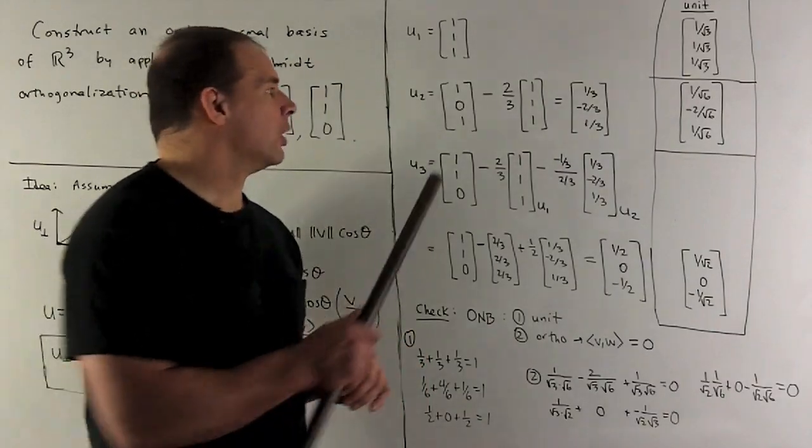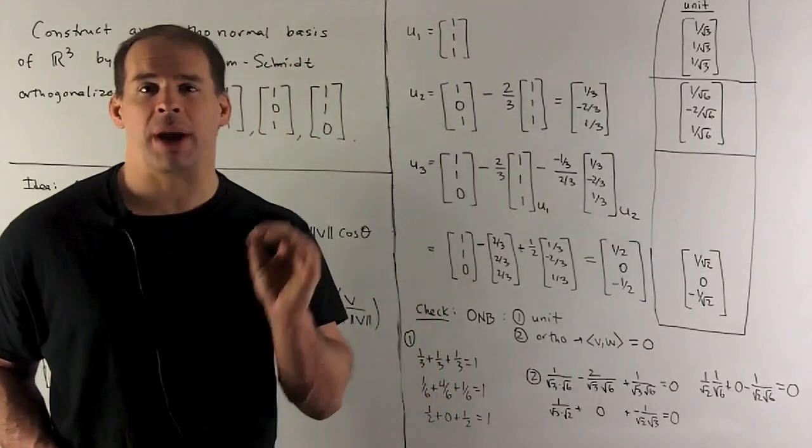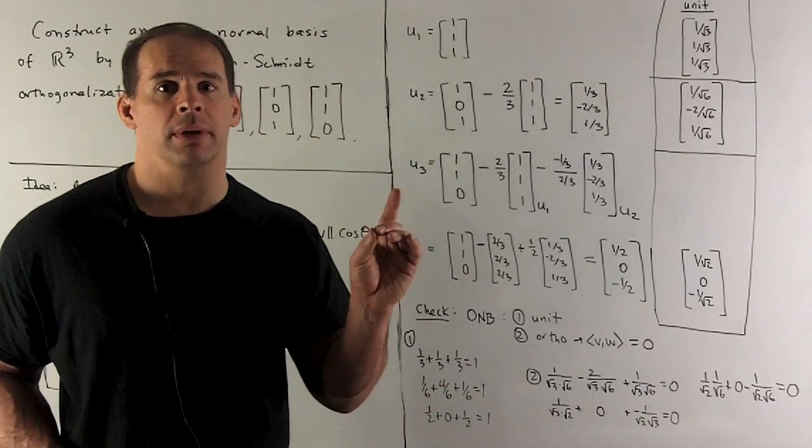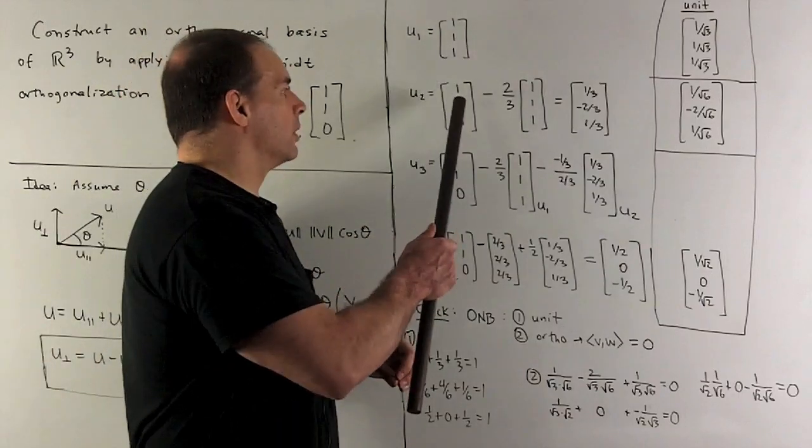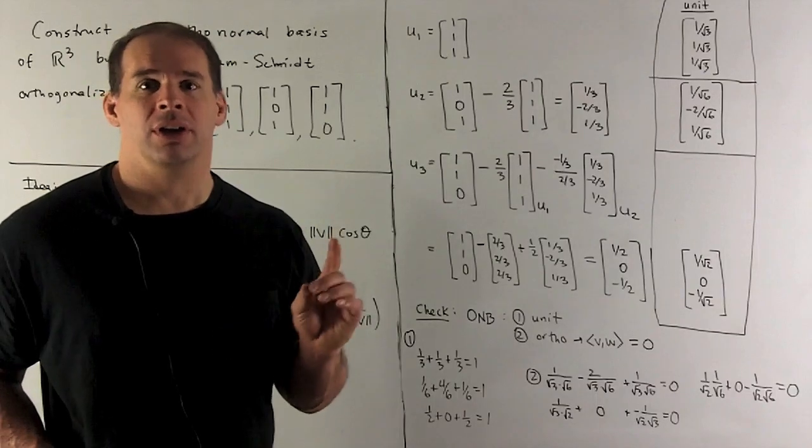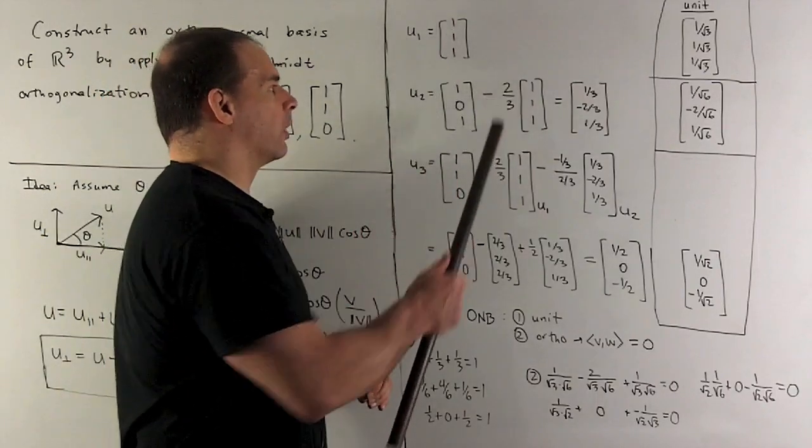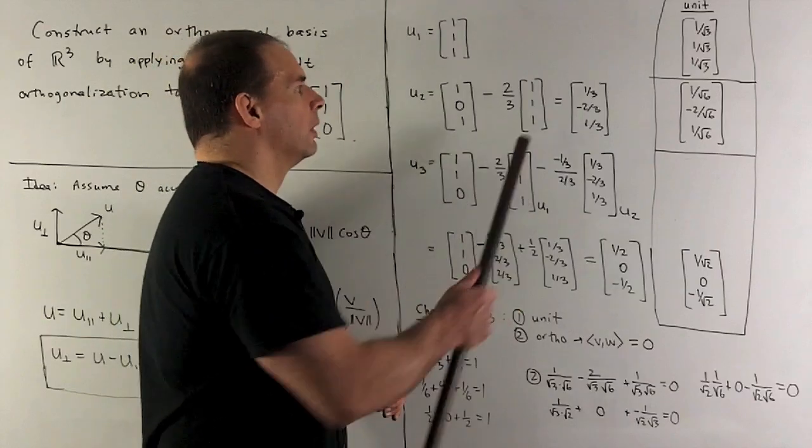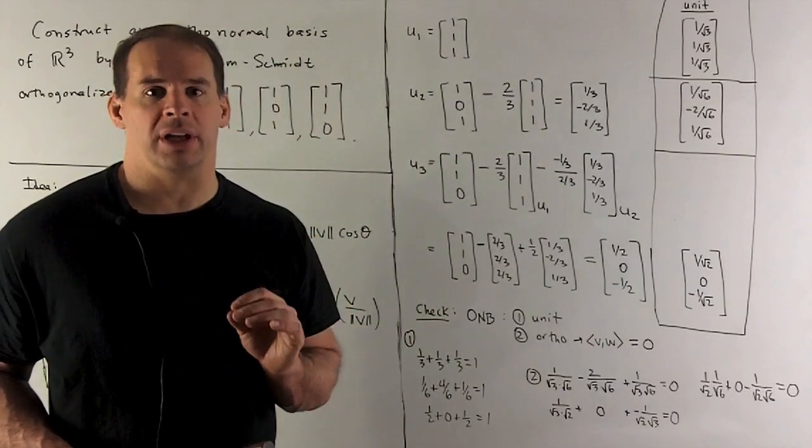I go to u2. We take our second vector, [1,0,1]. I subtract off the parallel part to u1. So that's going to be, take the dot product. So it's going to be 1 plus 0 plus 1 gives me a 2. Divide by the length squared of u1. So that's going to be 1 plus 1 plus 1 gives me a 3. Compute. I get [1/3, -2/3, 1/3]. And we wait for unit until the end.